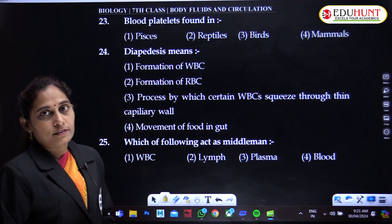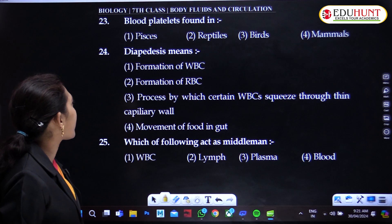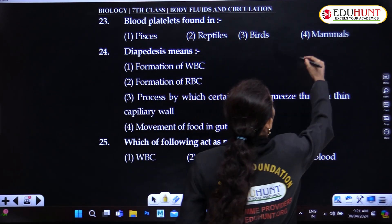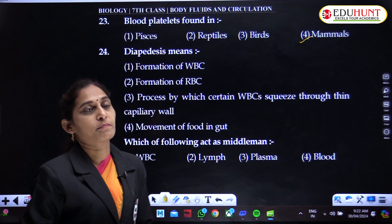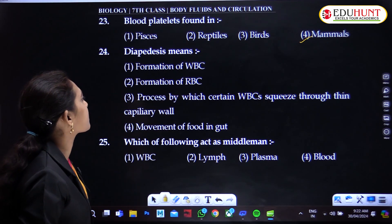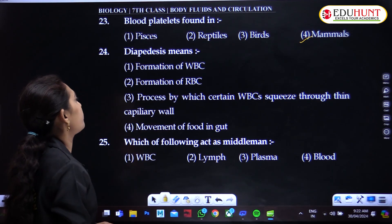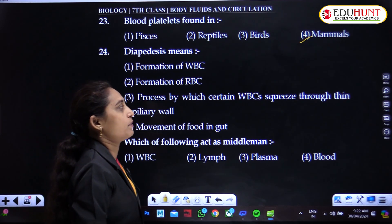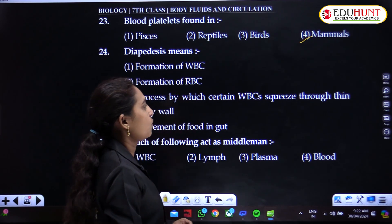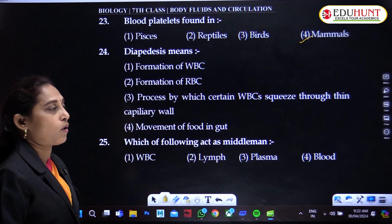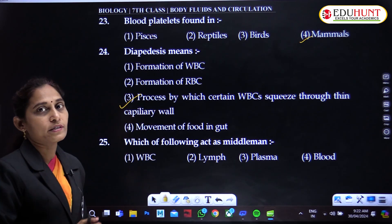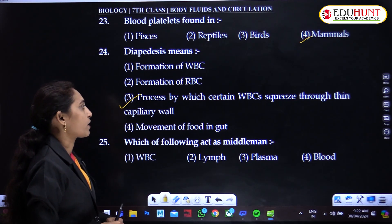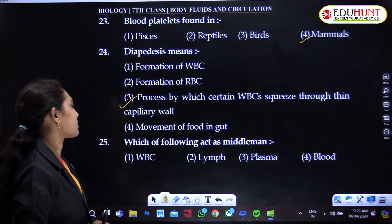Blood platelets are found in mammals. Diapodesis — the process by which certain WBCs are squeezed through thin capillary walls — this is the correct option. This process is known as diapodesis.